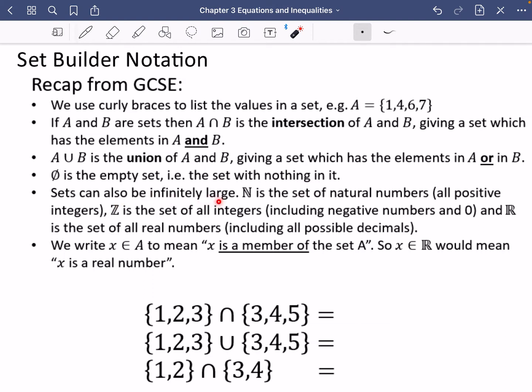Sets can also be infinitely large. This N symbol, which is like a capital N with a line drawn through it, is the set of natural numbers, and it's all the positive integers. The Z symbol is the set of all integers, and it includes negative numbers and zero.